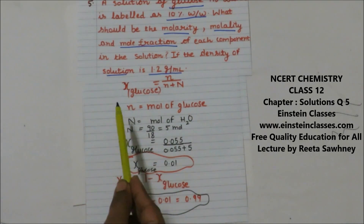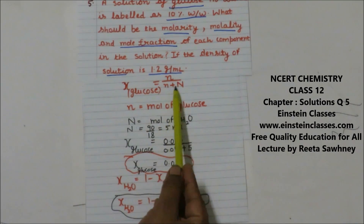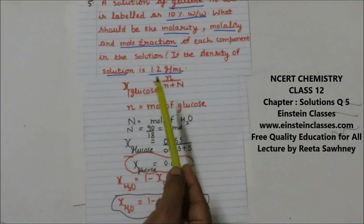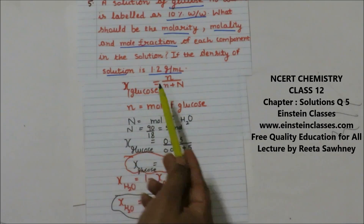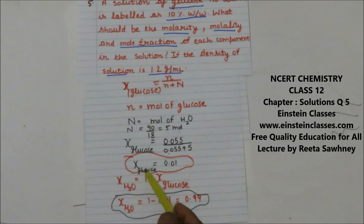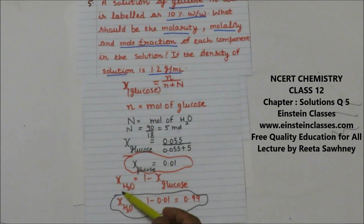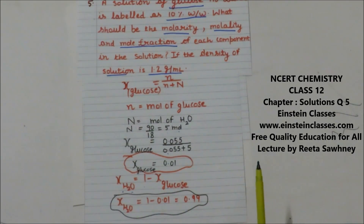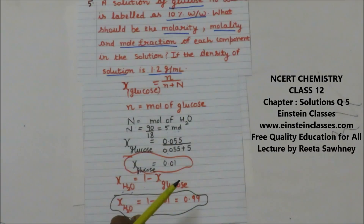The mole fraction of glucose is moles of glucose divided by total moles of solution, that is moles of glucose plus moles of solvent. Placing the values: moles of glucose = 0.055 and moles of water = 5. So the mole fraction of glucose comes out to be 0.01. The mole fraction of water = 1 minus 0.01 = 0.99. We have calculated the mole fraction of each component.